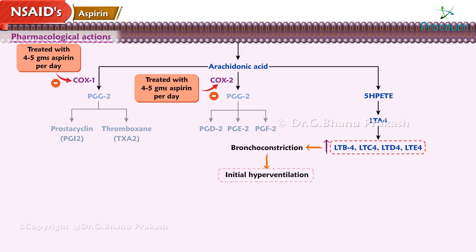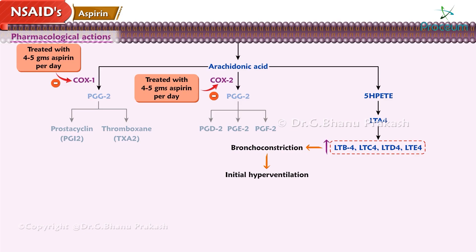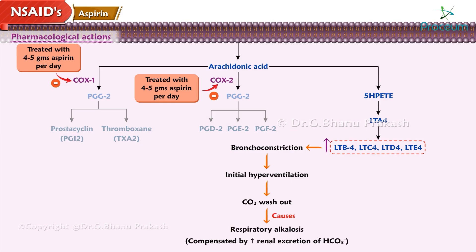In patients treated with 4 to 5 grams of aspirin per day, the following changes are evident: there will be initial hyperventilation as a compensatory mechanism due to severe bronchoconstriction induced by increased synthesis of leukotrienes. Hyperventilation leads to CO2 washout which eventually causes respiratory alkalosis, compensated by increased renal excretion of bicarbonate.